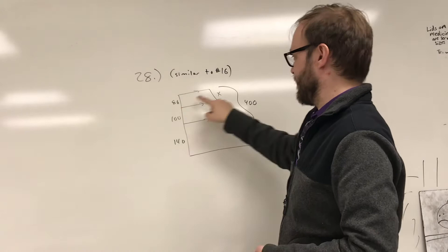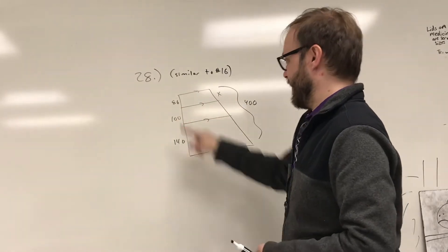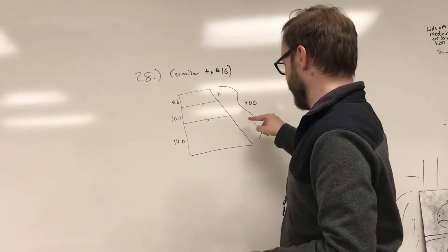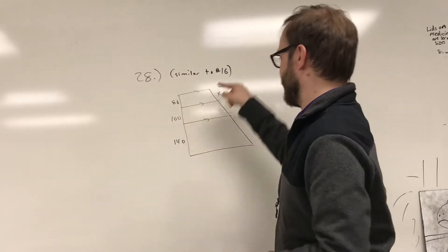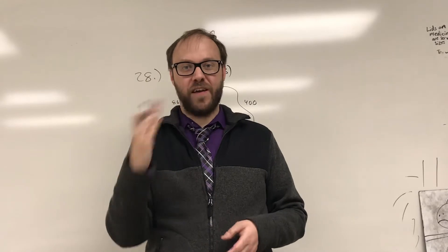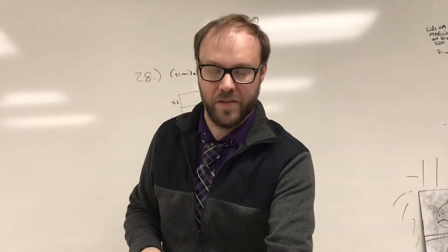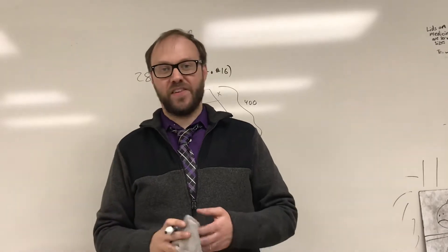You can do these from left to right. So like left over right is equal to left over right. Right over left is equal to right over left. Any of those proportions that you can create from left to right or up to down, those ratios are all going to be the same as long as you're comparing things that are in the same position.